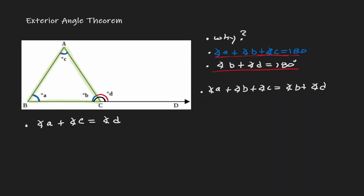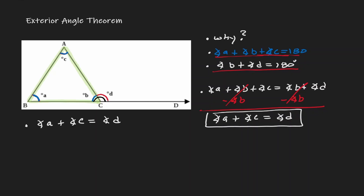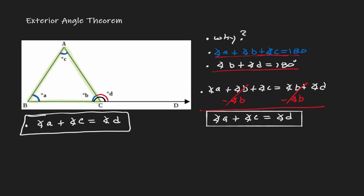What would happen if we subtract angle B from both sides? Angle B cancels, and we're left with: angle A plus angle C equals angle D. This is exactly the conclusion we stated — the summation of the two interior opposite angles is equivalent to the exterior angle. This is what we refer to as the exterior angle theorem.